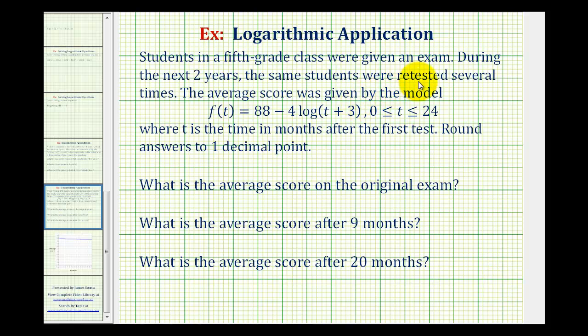Students in a fifth grade class were given an exam. During the next two years, the same students were tested several times. The average score was given by the model f(t) equals 88 minus 4 times the common log of the quantity (t + 3), where t is the time in months after the first test. We want to round all answers to one decimal point.